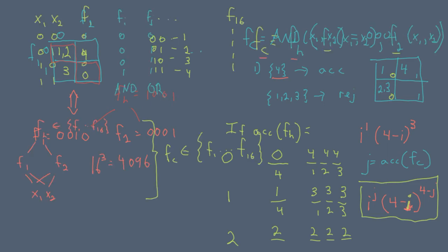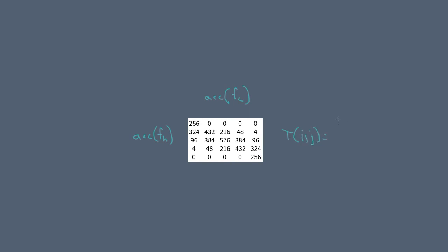In this way, we can visualize the space of 4096 once composed two variable Boolean functions along the two dimensions of accfh and accfc. So every entry in this table is a count of the table representations corresponding to a composite function that accepts i input states and a head function that accepts j cells.